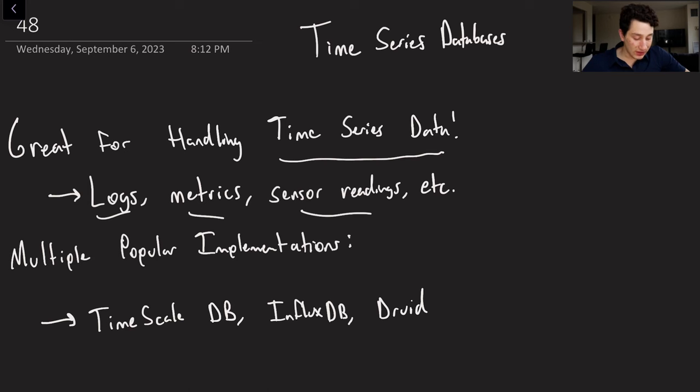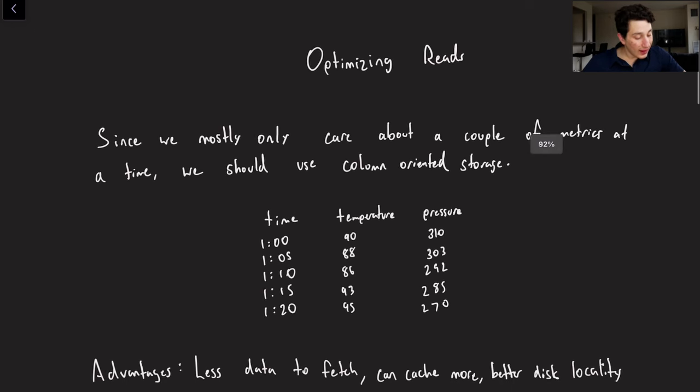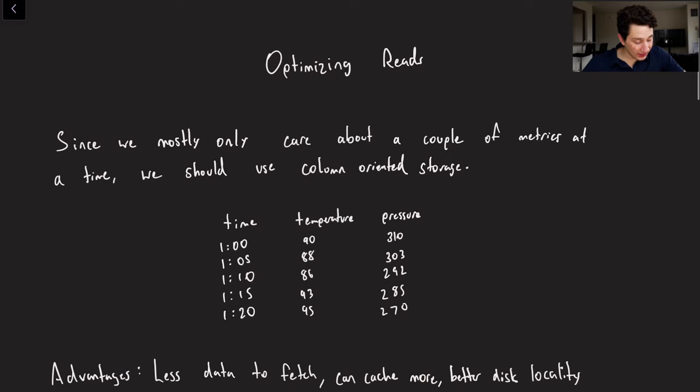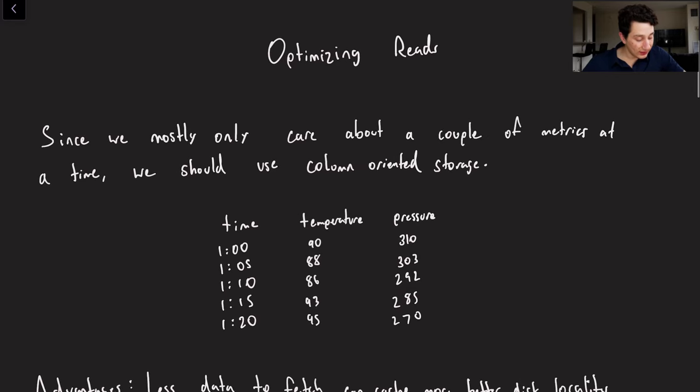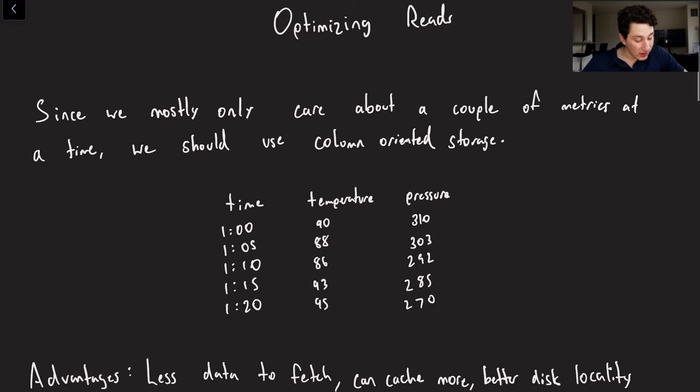This video is most going to be inspired by TimescaleDB but there's also InfluxDB and Apache Druid. So feel free to look into those as well. So how is it that time series databases are going to allow us to optimize reads, writes, and actually as well deletes? Let's start talking about them.